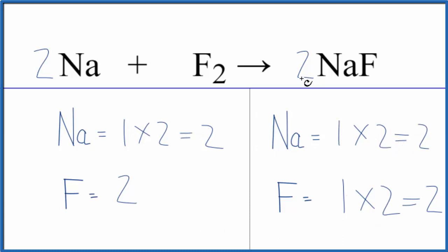The key here is that when a coefficient of two is in front, it applies to all of the elements. This is Dr. B with the balanced equation for sodium plus fluorine gas yields sodium fluoride. Thanks for watching.